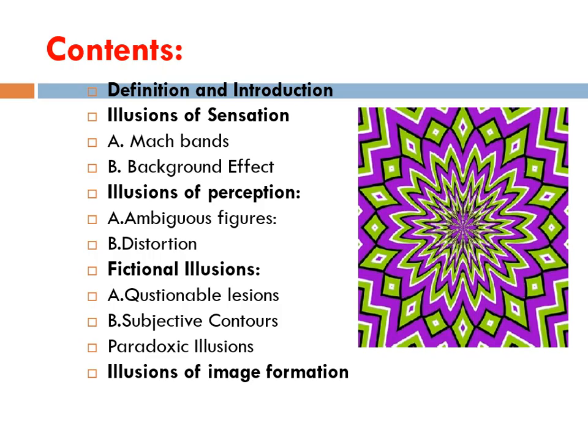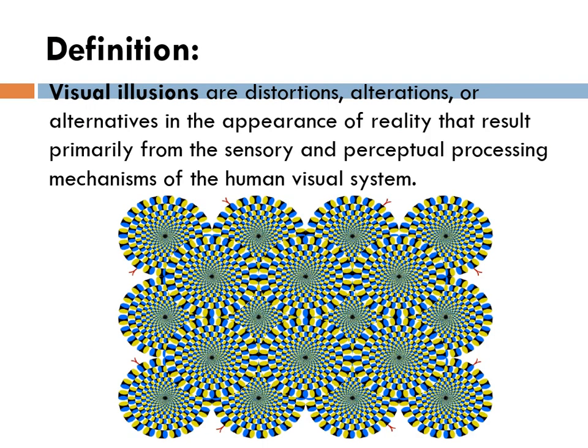First we'll talk about the definition of visual illusions. They are distortions, alterations in the appearance of reality as a result primarily from sensory and perceptual processing mechanisms of the human visual system. So you see things that are not real — like these circles appear to be moving, but they are not moving. Your brain is playing tricks on you.